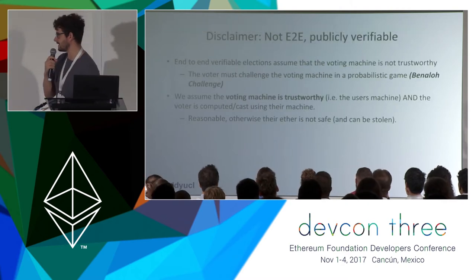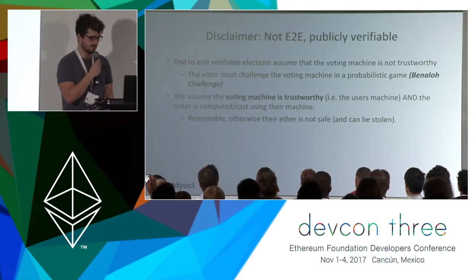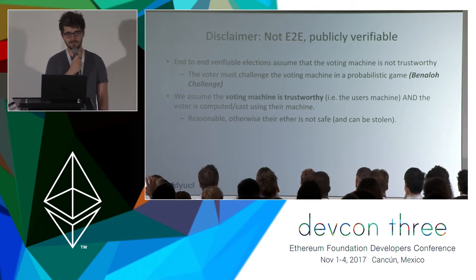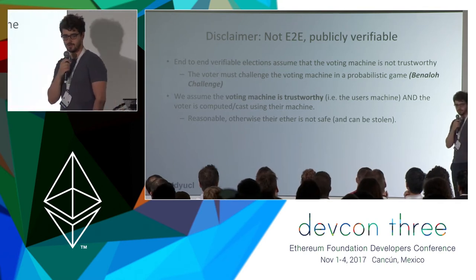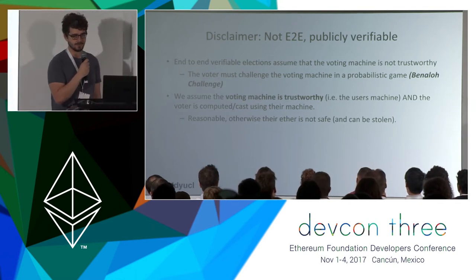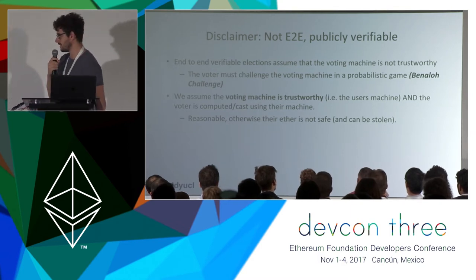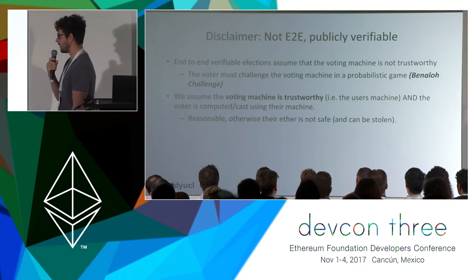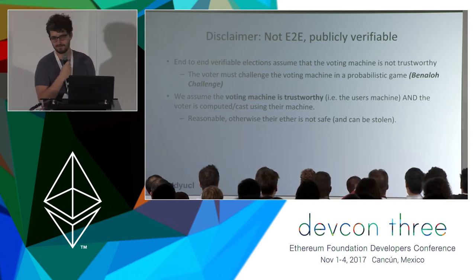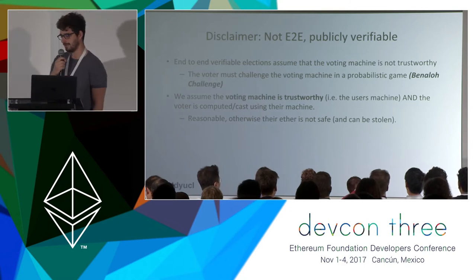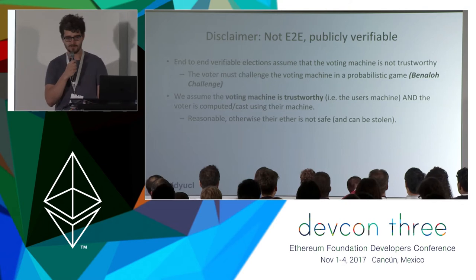My disclaimer is that this protocol is not end-to-end verifiable as I mentioned at the very beginning, because in an end-to-end verifiable system we also assume the voting machine cannot be trusted. But this is a fully decentralized voting protocol — we have no central authority to provide hardware for us, so we have to assume the voting machine is trustworthy. I think that's a reasonable assumption because if you hack my machine you're probably going to steal all my coins, so I have an incentive to keep my machine trustworthy.